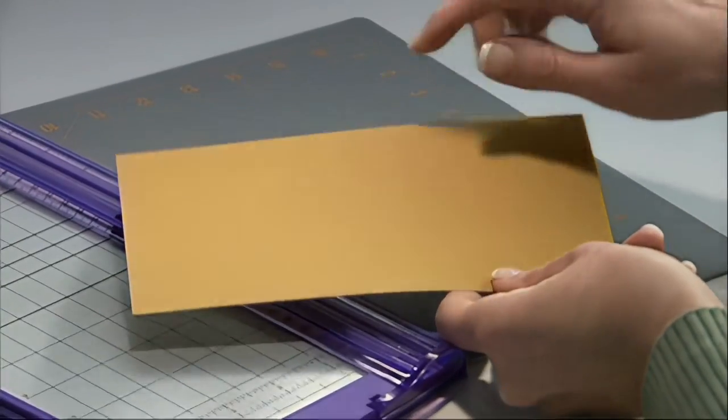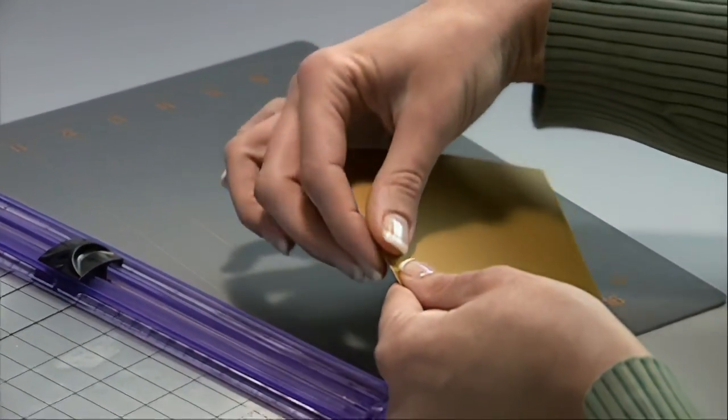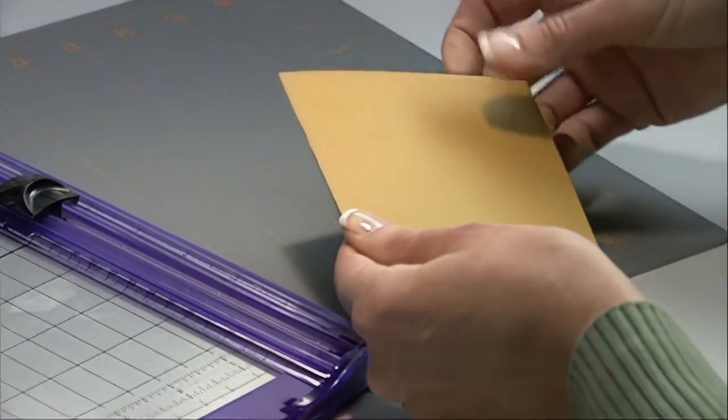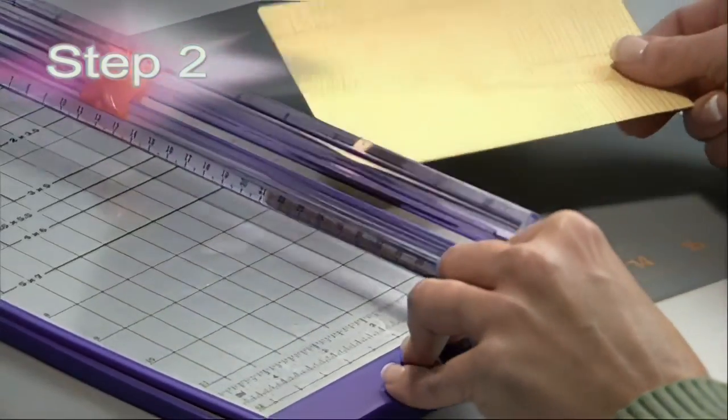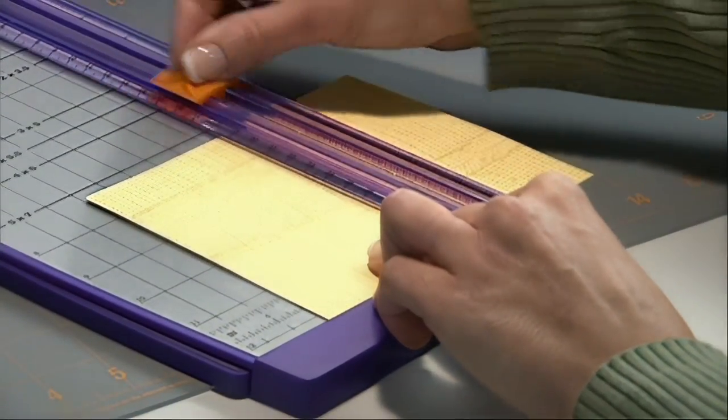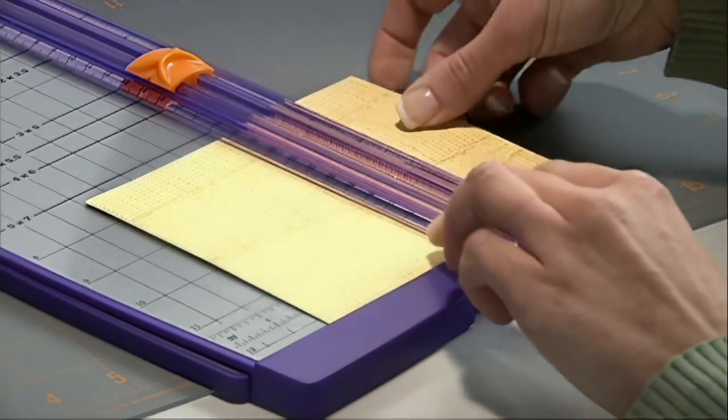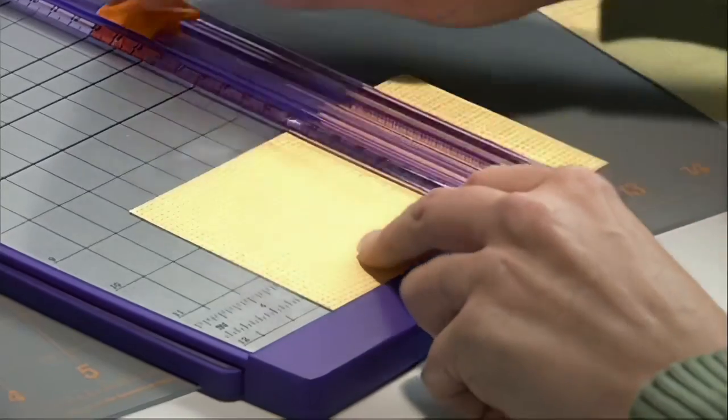As you can see the scoring blade gives us a definite crease to make our fold along. Next we will use a piece of patterned paper and trim it to measure 3 1⁄2 inches by 3 1⁄2 inches. This patterned paper has a white core to it which is essential for our next step.